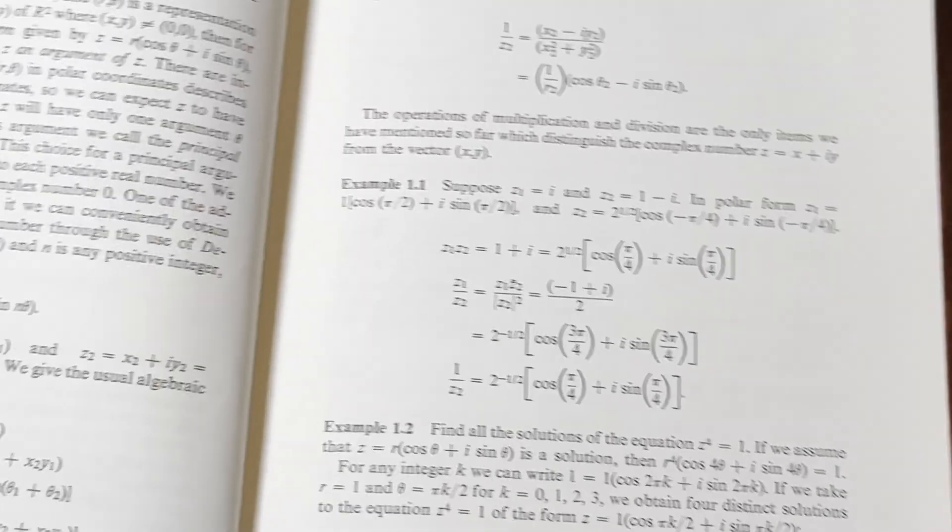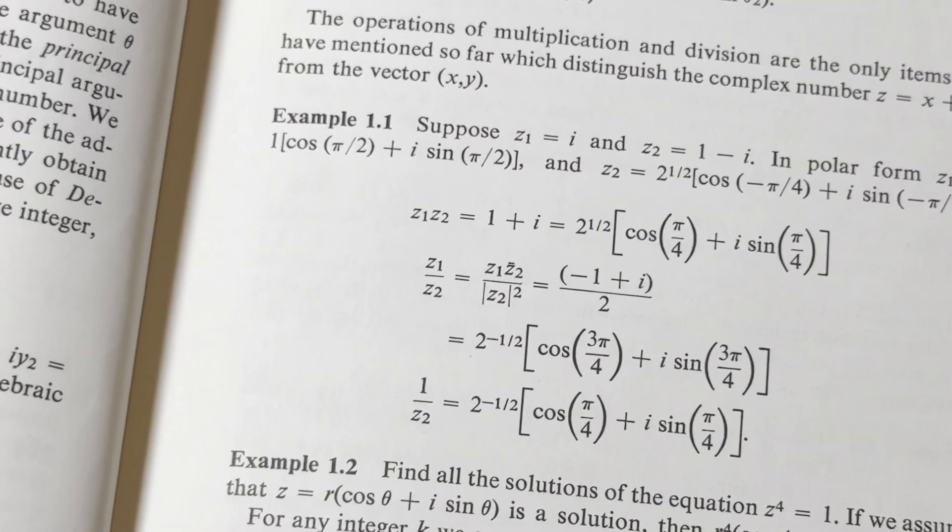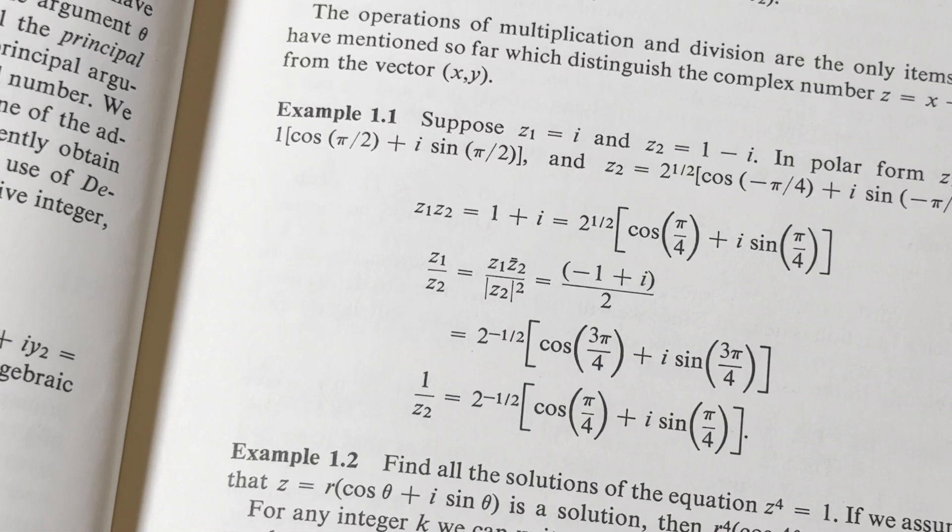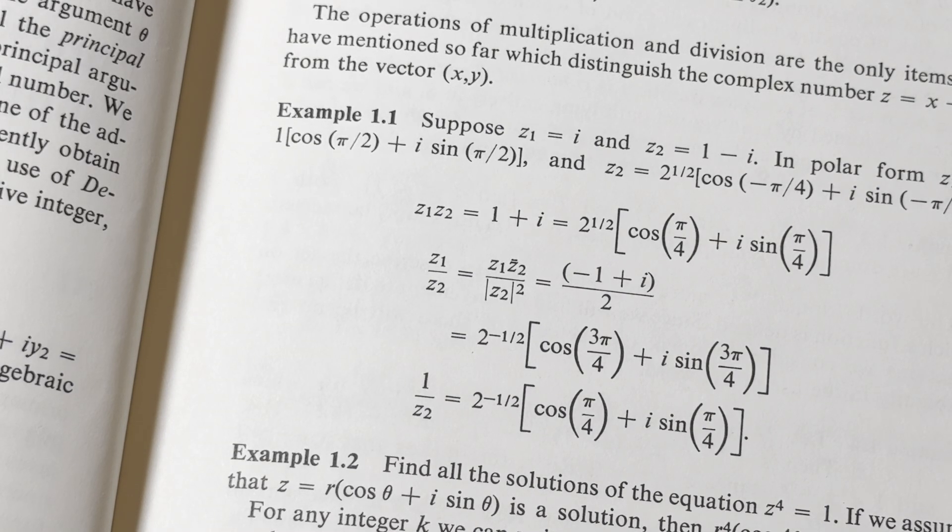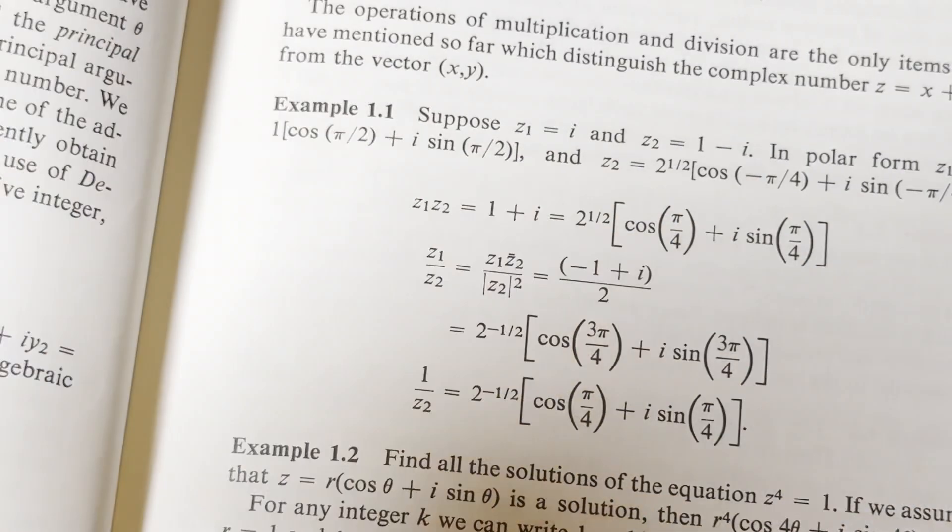Some examples here. It's pretty good. I'll zoom in here for the example. Suppose Z1 is equal to i, and Z2 is equal to 1 minus i, and then they give you the polar form for both Z1 and Z2. They don't tell you how they got it, but they just do it pretty quickly. They just give it to you, so you've got to think about that.